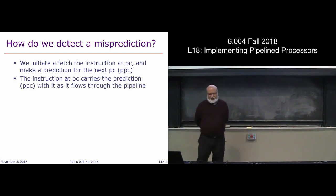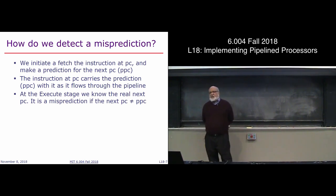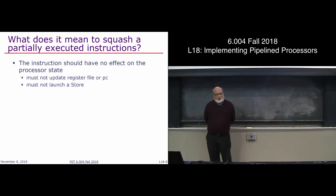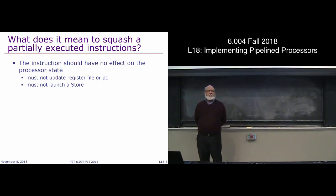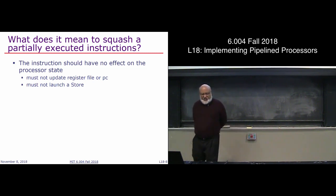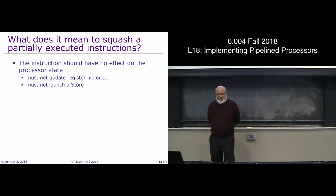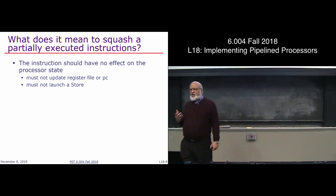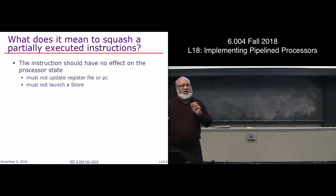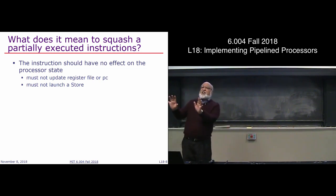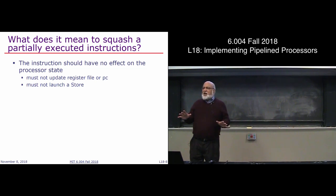Step one: at the execute stage, we declare it's a misprediction. Second problem: what does it mean to squash a partially executed instruction? The effect we want: it must not update the register file or the PC, and it must not launch a store into memory. I like to think of memory stores as launching a missile — you can't retract it. Once you say store, you can't say sorry please undo it. So whenever there's a store, be very careful: do not even launch it if you have the slightest doubt it should not have been done.